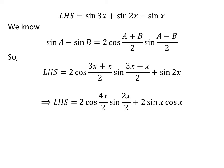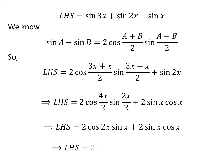So, the left-hand side of the equation is equal to 2 times cosine of 4x/2 times sine of 2x/2 plus 2 times sine of x times cosine of x. Canceling the common factor 2 in the numerator and denominator of each fraction gives us 2 times cosine of 2x times sine of x plus 2 times sine of x times cosine of x. Taking out the common factor 2 times sine of x gives us this expression.